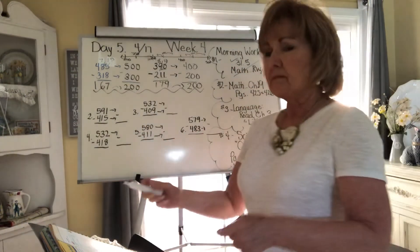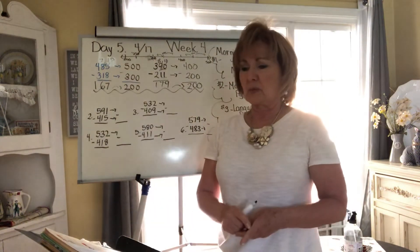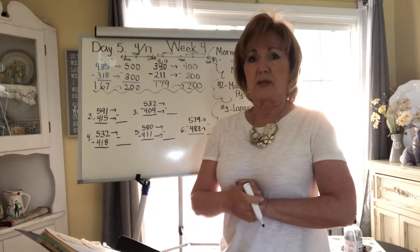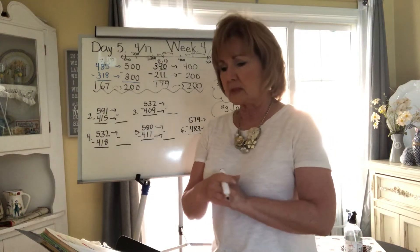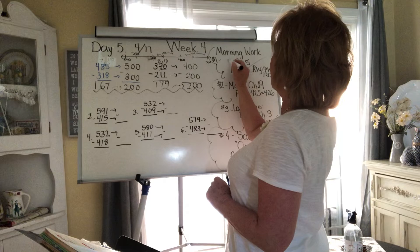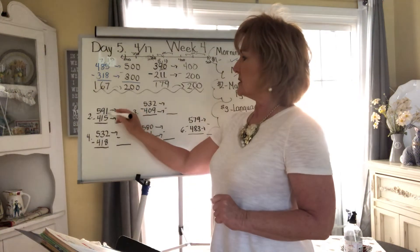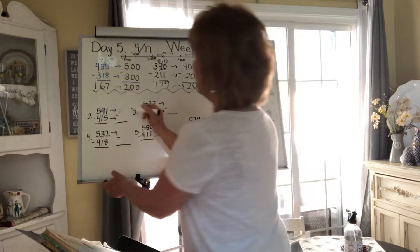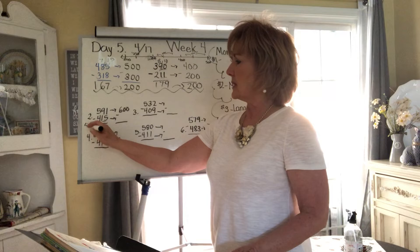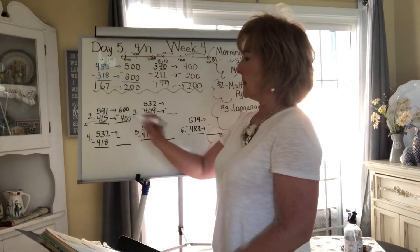Going to the next page — I'll give you the rounded estimates and then you'll solve both problems on your own. 591 is between 500 and 600, and 91 is greater than 50, so it rounds up to 600. 415 is between 400 and 500, and 15 is less than 50, so it rounds down to 400. So you've got 600 take away 400, then go back and solve.